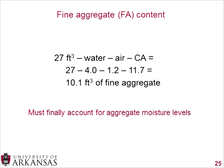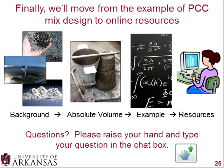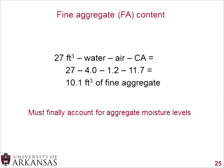To find the fine aggregate content, take one cubic yard — 27 cubic feet — and subtract water (4), air (1.2), cement (2.6), and coarse aggregate (11.7). That gives you approximately 10.1 cubic feet of fine aggregate. The last step is to adjust for moisture levels. If your moisture levels are on the higher side, you can decrease that from the amount of water you're putting in. That step is a bit more involved, which is why it wasn't fully worked through here, but you do need to adjust for your aggregate moisture levels.